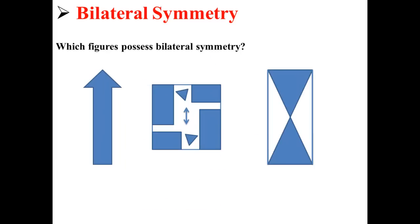Here's a question: below we have three figures — which of these figures possesses bilateral symmetry? Our first figure does possess bilateral symmetry because we can draw a line through it and split it into two equal halves. This second figure does not have bilateral symmetry; there is nowhere we can pass a line through it and create two equal halves.